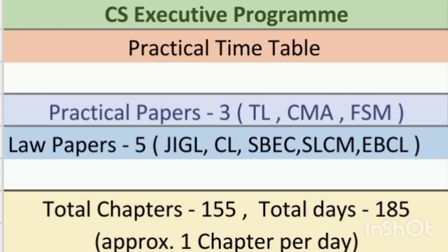Totally we have 155 chapters in the CS Executive program. In the first module we will be having 78 chapters and in the second module we have 77 chapters. We need some days for revision and practice, so we need to allocate a few days for that too. Totally we have eight subjects, in which five are law-based papers and three are practical papers. The law-based papers are JIGL, Company Law, SBC, SLCM, and EBCL. The practical papers are Tax Laws, CMA, and FSM.